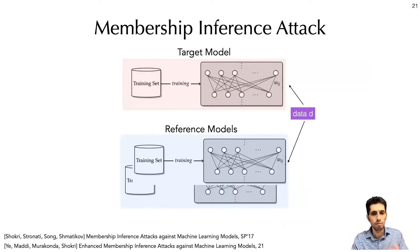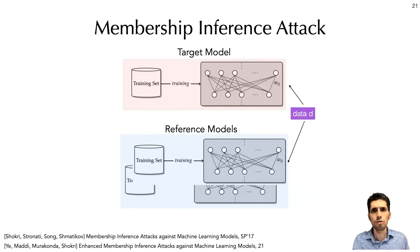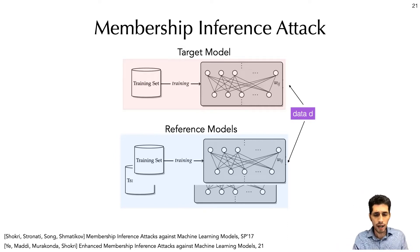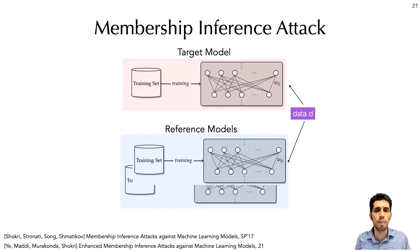Another test, again in simplified form, is to compare the error of the target model on target data point D with the error of some reference models which are not trained on D and are trained on some random samples from the population, and see if they are similar. If the error of the target model on D and the error of the reference models on D are similar, we can probably conclude that this data is a non-member. But in either of these tests, if we find some information that convinces us that there is some difference in the behavior of the models with respect to data point D compared to our references, then we can predict it as a member.